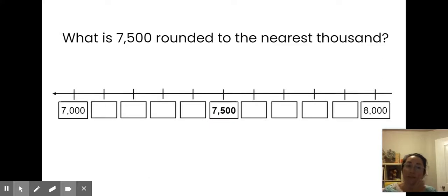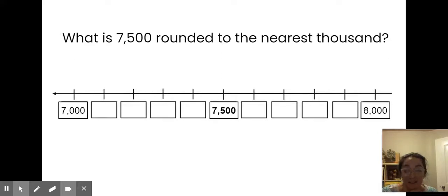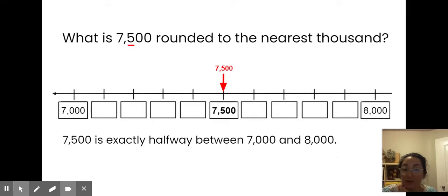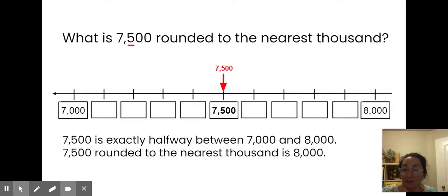What is 7,500 rounded to the nearest thousand? If I'm rounding to the nearest thousand, I need to look at the hundreds digit — in this case, the hundreds digit is a five. I have two strategies: I can look at where my number is on the number line and see if it's halfway or past halfway to round up, or less than halfway to round down. Or I can look at the hundreds digit and remember the rhyme — four or less let it rest, five or more make it soar. My number is exactly halfway between 7,000 and 8,000, and my hundreds digit is a five, so 7,500 rounded to the nearest thousand is 8,000.